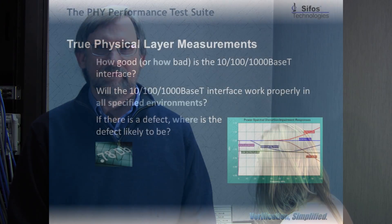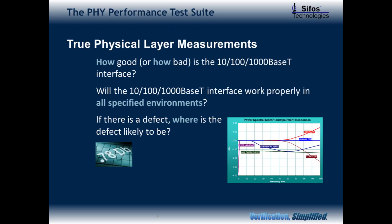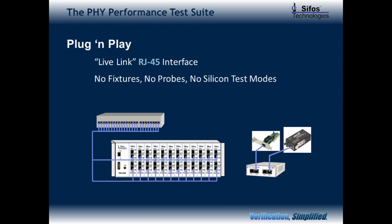While our tests are running, let's go over important features of the PHY View Analyzer and the PHY Performance Test Suite from Syphos Technologies. The PHY View Analyzer produces true parametric physical layer measurements, meaning that testing will address physical layer performance, assess interoperability robustness, and will localize defects. Traditional packet flow testing falls short in all of these objectives. The PHY View Analyzer is true plug-and-play, with each test port directly interfacing the device under test through RJ45 test cables and without the need for adaptive fixtures or silicon-based test modes.